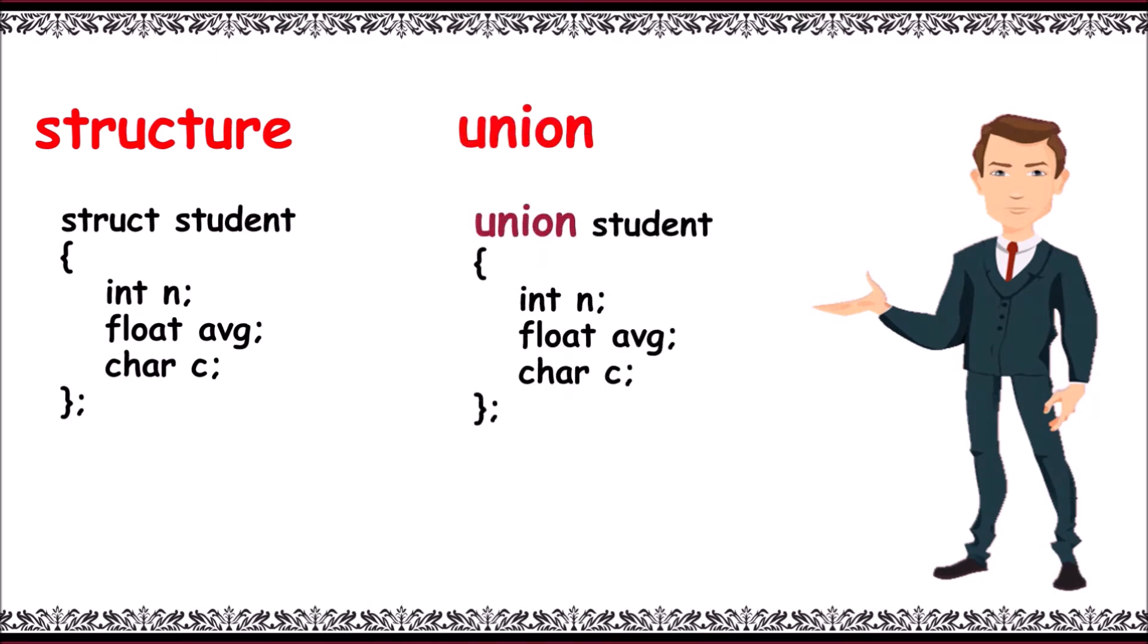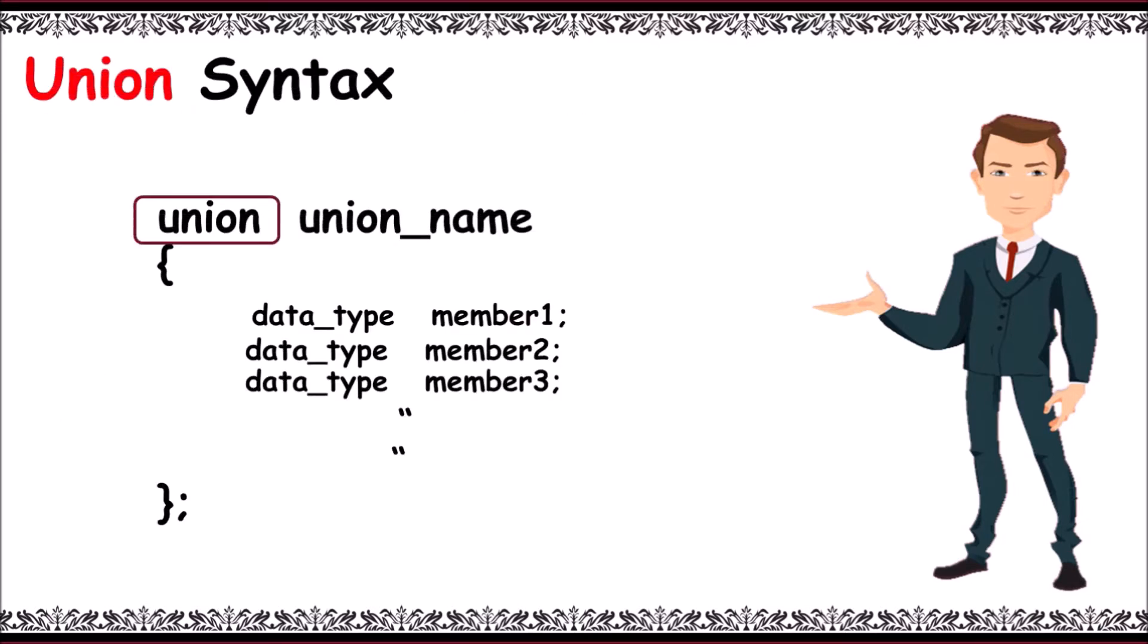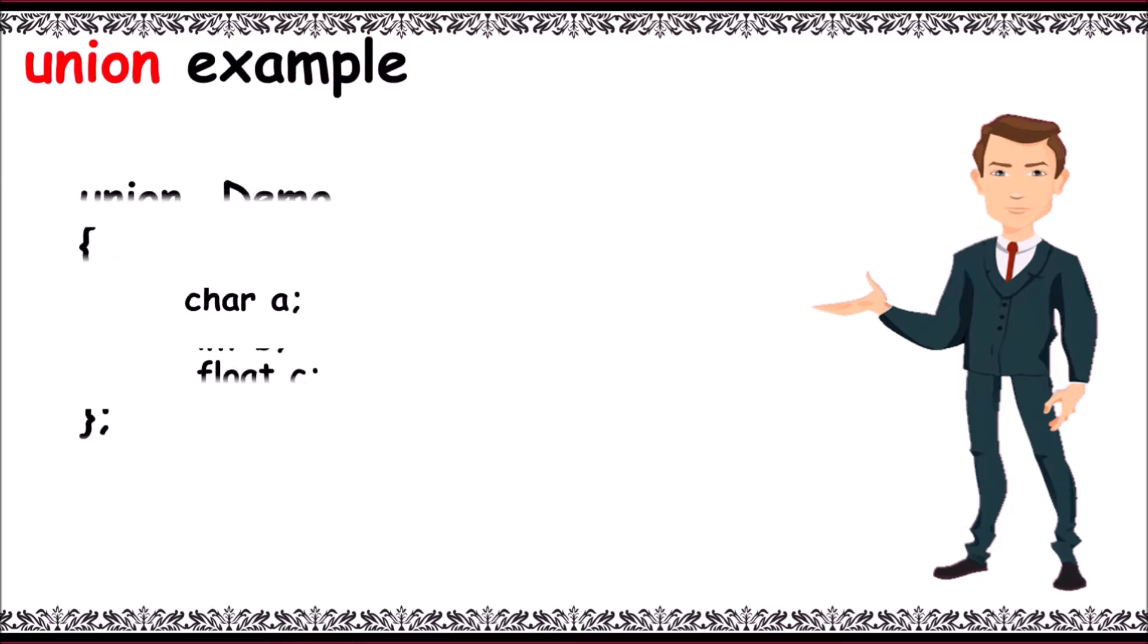Union syntax contains union keyword, union name, and body with the data members. For example: union as keyword, demo as union name, containing int a, float b, char c as union members, ending with semicolon.